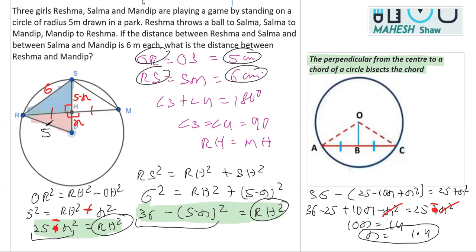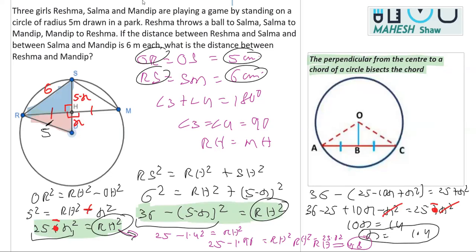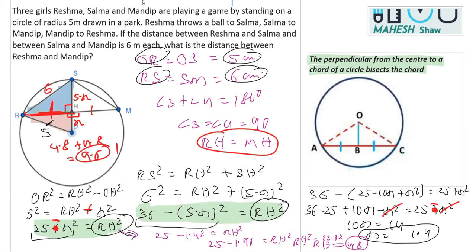Once we get x equals 1.4, we substitute back: RH² = 25 − (1.4)² = 25 − 1.96 = 23.04, so RH equals 4.8. From the figure, RH equals HM equals 4.8, so RM equals 4.8 plus 4.8 equals 9.6. The distance between Reshma and Mandeep is 9.6 meters.